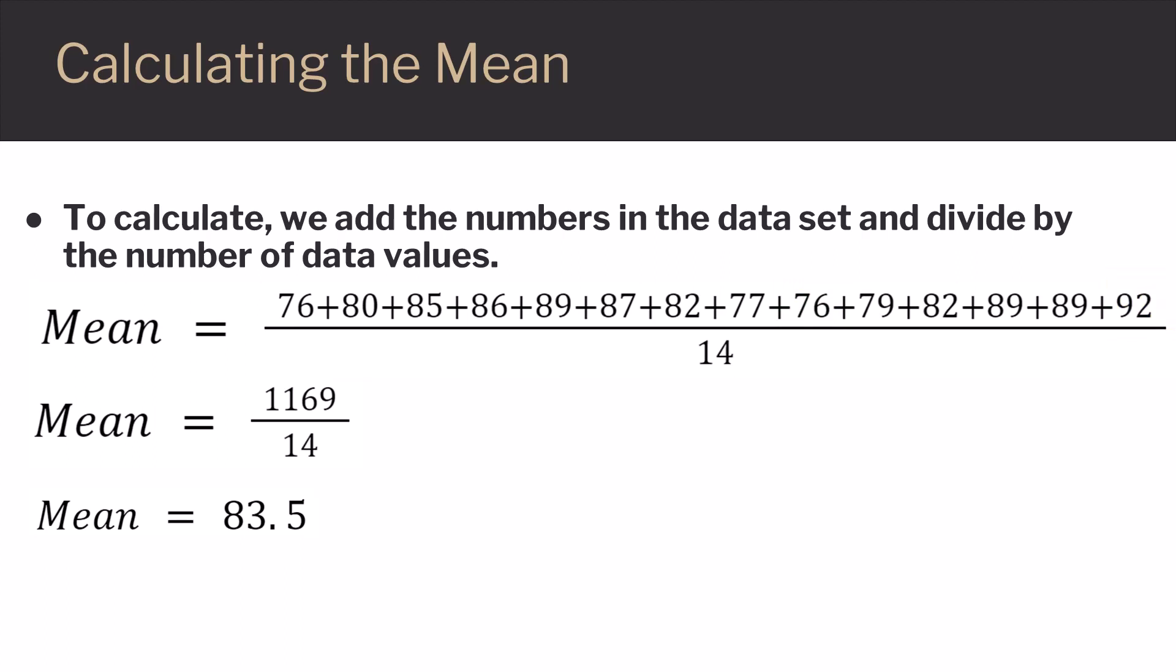So our mean is somewhere in between. It's not a low number like 7, and it wasn't something like 800. It's somewhere in the center of our data, and it represents the data that way.